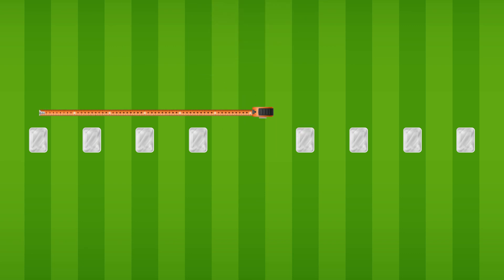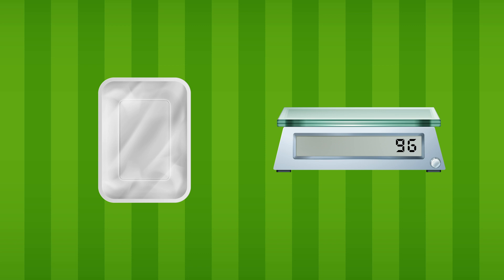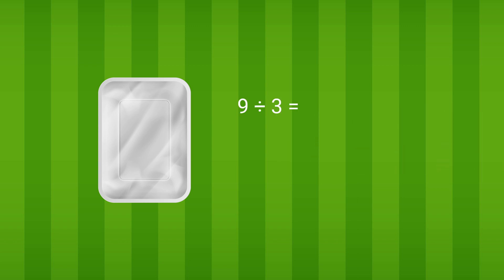Measure the position of each tray then weigh. Note down the amount of fertilizer received in the individual trays, but divide this weight by the number of passes made to calculate the weight of fertilizer received in each tray for one pass. The next step is to convert this into grams per square meter, by dividing the amount of fertilizer received in each tray by the area of the tray.